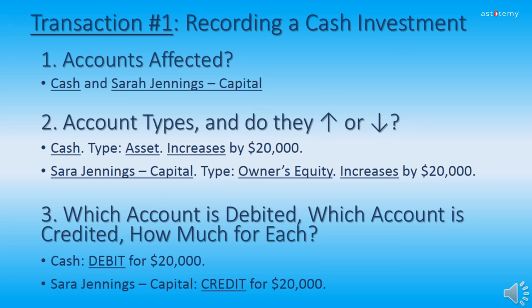Number three — which account is debited, which account is credited, and how much for each? Remember the rules for debit and credit: one account is debited and the other is credited. Cash will be debited for $20,000; Sarah Jennings Capital will be credited for $20,000. Assets are recorded on the debit side when you increase the account, and owner's equity accounts are credited when you increase the account. Both accounts are increased, so cash is debited for $20,000 and Sarah Jennings Capital is credited for $20,000. This will make sense as we go through the actual recording on the next slide.